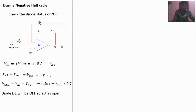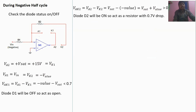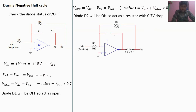For diode D2, V-AK2 = V-A2 minus V-K2. V-A2 is plus 15 volts and V-K2 is the negative input value. Substituting: V-AK2 = plus 15V plus |V-in|, which is always positive and always greater than 0.7V. So diode D2 is in on condition, acting as a resistor with a 0.7V drop. In the equivalent circuit, diode D1 is open and diode D2 is forward biased. This is also a feedback configuration.